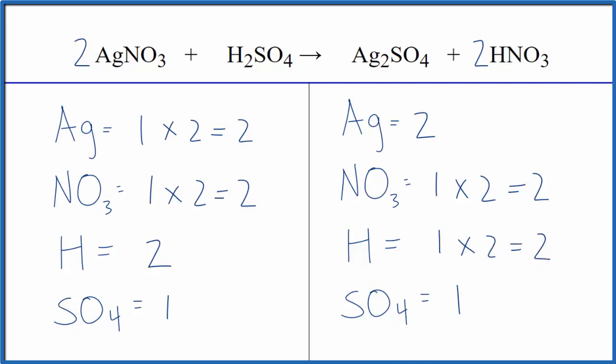So we're done. This equation is balanced. When we have polyatomic ions that appear on both sides of the equation, like the nitrate or the sulfate, counting them as one item just simplifies the balancing and reduces errors.